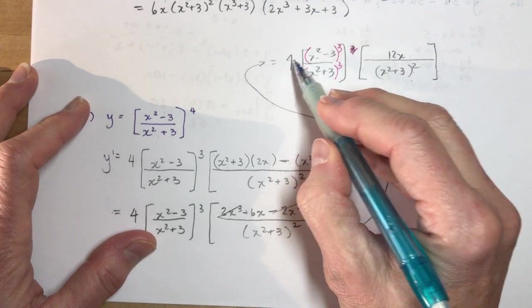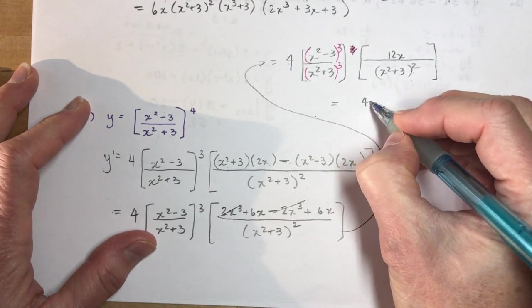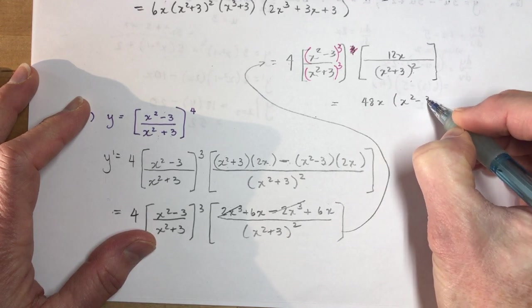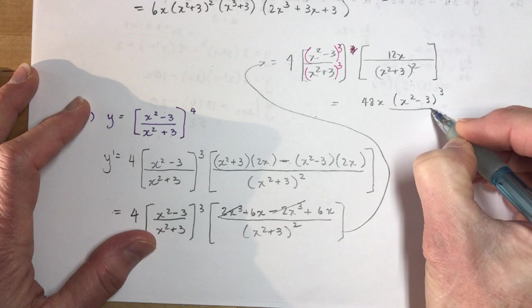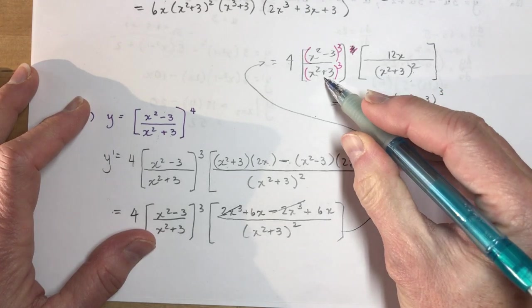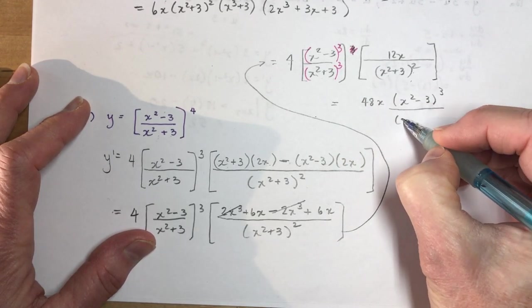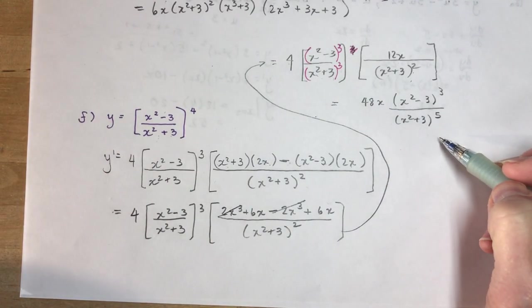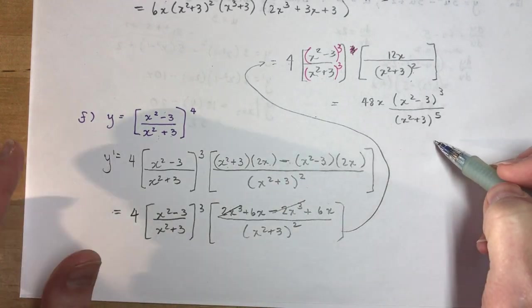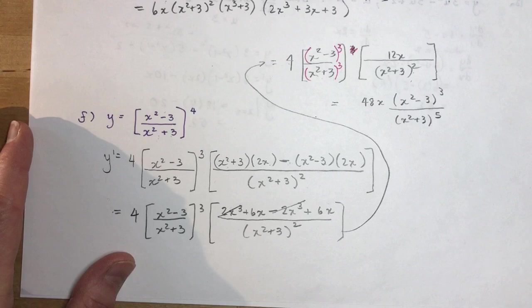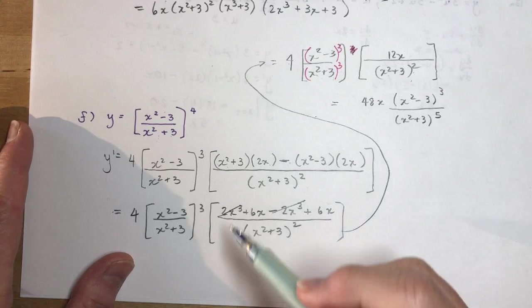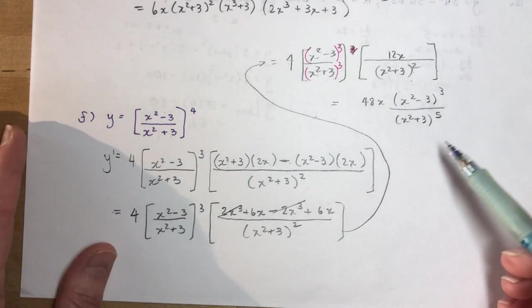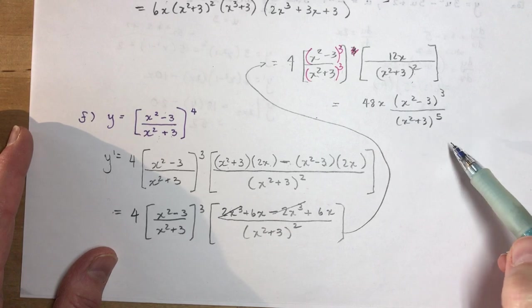In the numerator I have 4 times 12x so that's 48x and then I have this thing that's cubed (x² - 3)³ and this is all over (x² + 3) now to the power of 5. So often you have to do that much work to get to a really nice conclusion and when we get into graphing derivative or graphing functions you're going to have to find the derivative to find where the slope is 0 so you need to have good skills for simplifying.